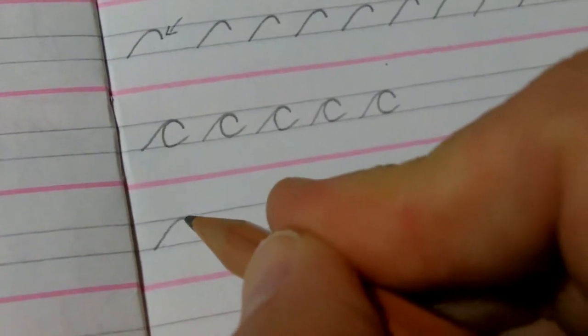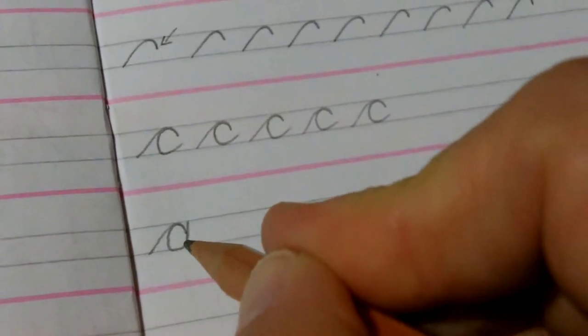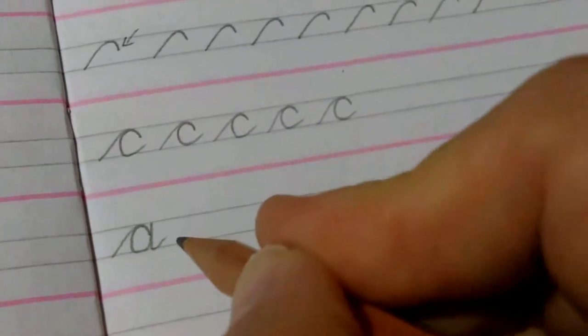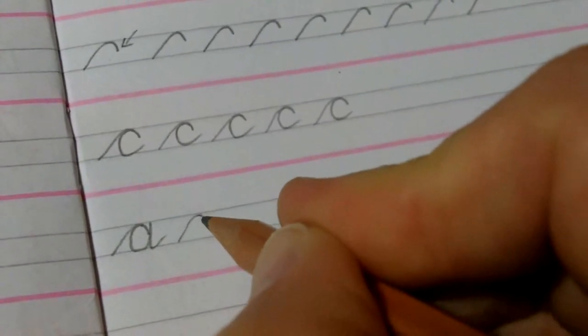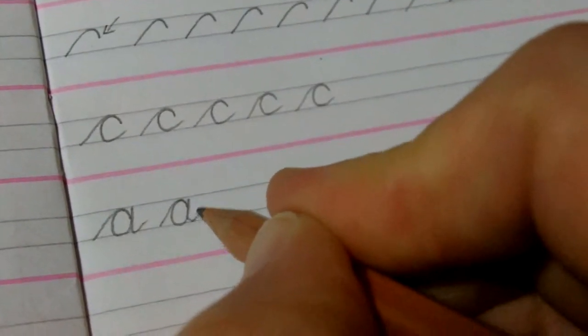Up, over, back round, straight up, straight down, tail. Up, over, back round, straight up, straight down, tail.